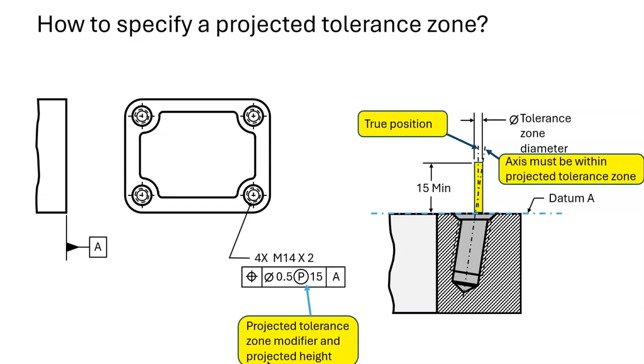If the mating part is quite thin, then it's not worth bothering with the projected tolerance zone. If the mating part is quite tall, then a projected tolerance zone is important.